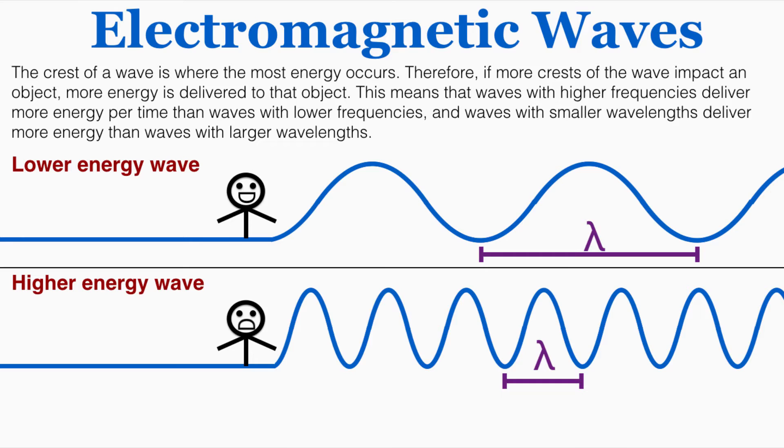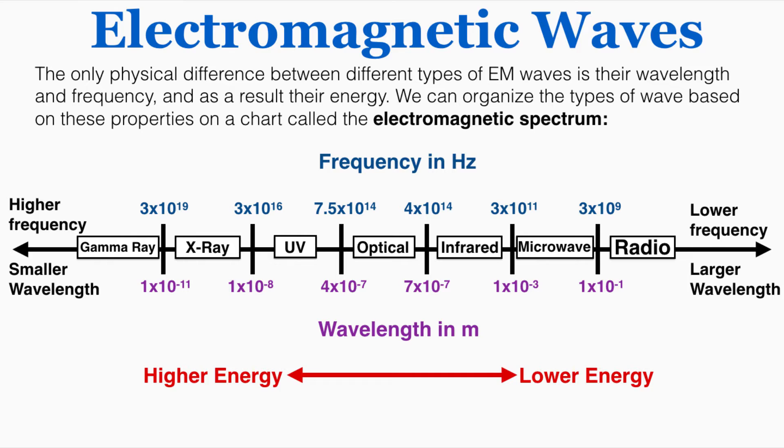So if a wave has a shorter wavelength and a higher frequency, it's carrying more energy per time than a wave with a higher wavelength and a lower frequency. The only physical difference between different types of EM waves is their wavelength and frequency, and as a result their energy. We can organize the types of wave based on these properties on a chart called the electromagnetic spectrum.